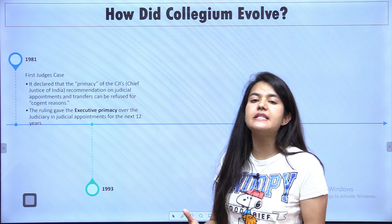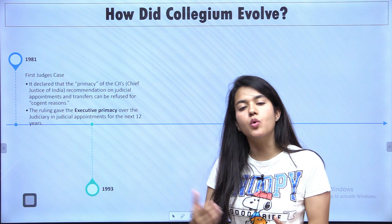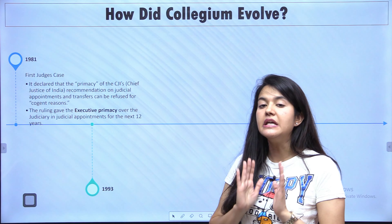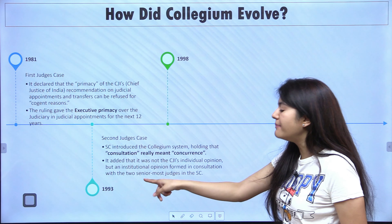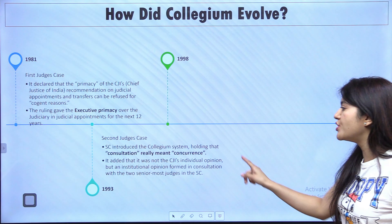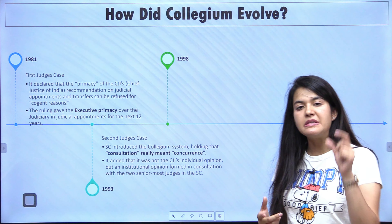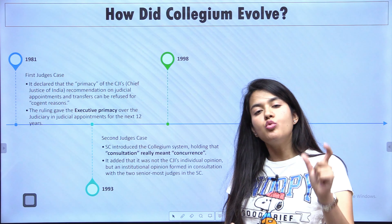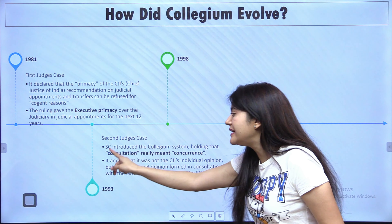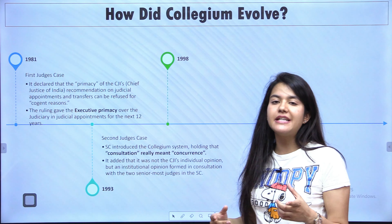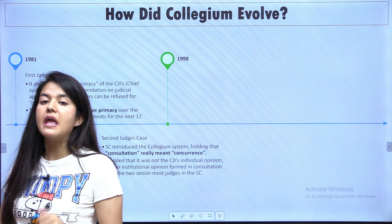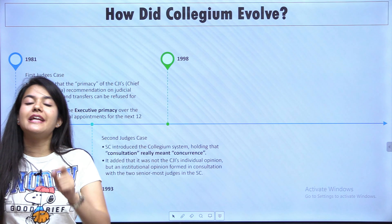Next, let's talk about appointment. The judges of the Supreme Court are appointed by the President under clause 2 of Article 124. So remember: article 124, and the President makes the appointment. The President consults with the judges of the Supreme Court and High Courts to make informed appointments. It is the President who appoints the judges.